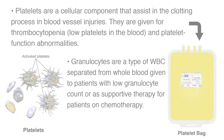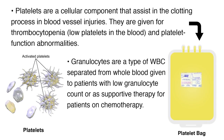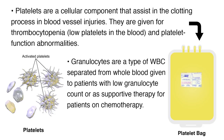Thirdly, we'll take a look at platelets. Platelets are a cellular component that assists in the clotting process in blood vessel injuries. They are given for thrombocytopenia, or low platelets in the blood, and platelet function abnormalities. Fourth, let's look at granulocytes. Granulocytes are a type of white blood cells separated from whole blood, given to patients with low granulocyte count or as supportive therapy for patients on chemotherapy.